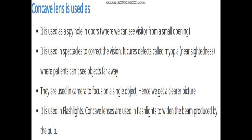A convex lens gives a slightly blurred image. Concave lenses are used in flashlights to widen the beam produced by the bulb. These are the uses to which lenses are put, due to the different kinds of images formed — different sizes and natures for various positions — which is why they are used in different ways. Thank you.